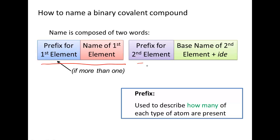The second word is based on the name of the second element. And remember in ionic compounds, whenever we named a compound, the anion always got ide at the end. That's going to be the same here. Even though there's no ions, the second element always ends in ide.